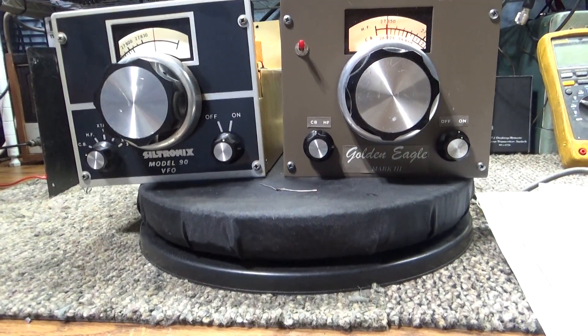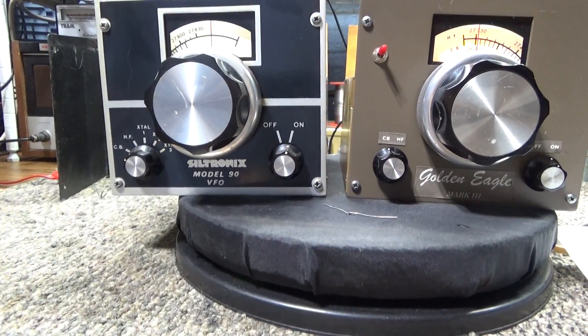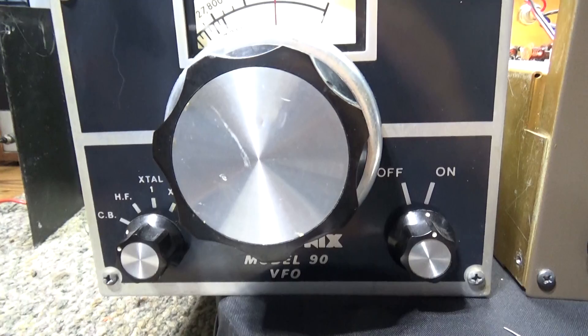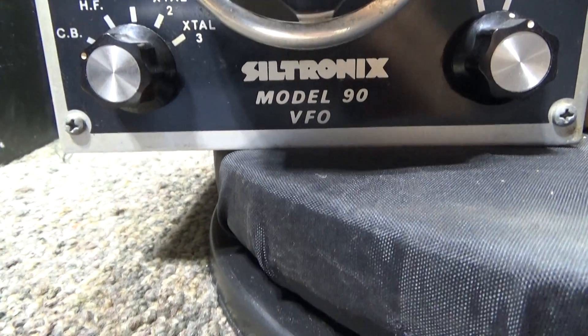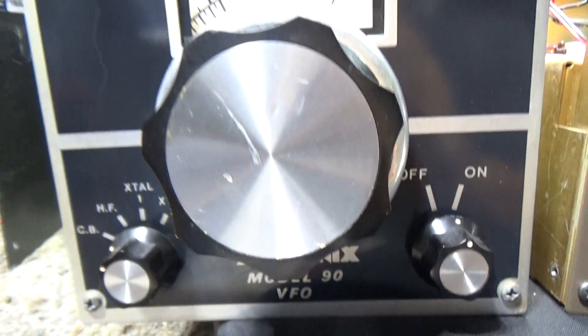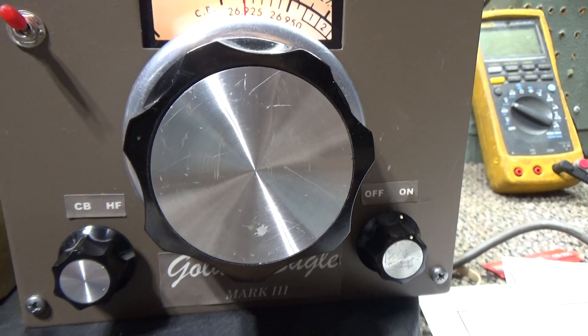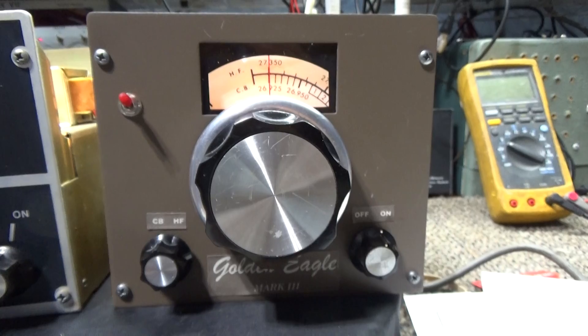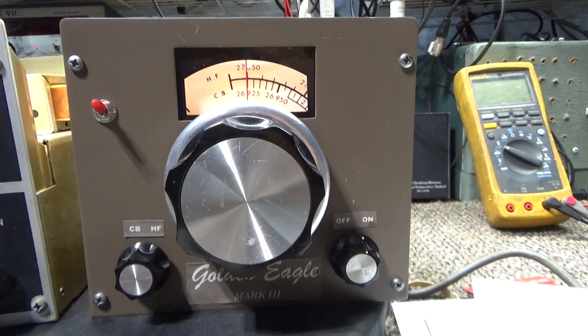Okay, today doing a video on the infamous Siltronics VFOs. This one here is a Siltronics model 90-3 for the Brown and Golden Eagle, and this one is a 90-7 which is very close to the frequency for a Golden Eagle.